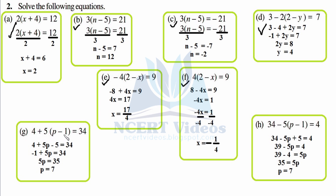Part g: 4 plus 5 times (p minus 1) equals 34. Open the bracket: 4 plus 5p minus 5 equals 34. Simplify: 4 minus 5 is minus 1, so minus 1 plus 5p equals 34. Transposing minus 1: 5p equals 34 plus 1, which is 35.